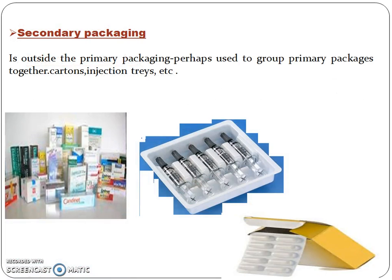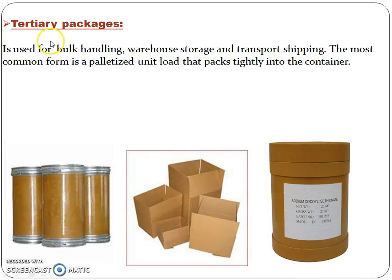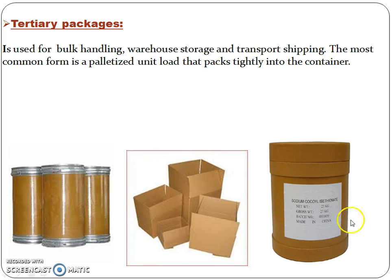Secondary packaging is outside the primary packaging and is perhaps used to group primary packages together — examples include cartons and injection trays. Tertiary packaging is used for bulk handling, warehouse storage, and transport shipping; the most common form is the palletized unit load that packs tightly into containers.